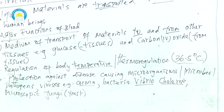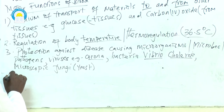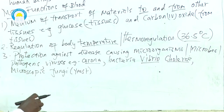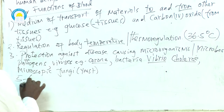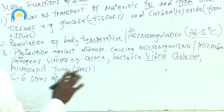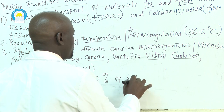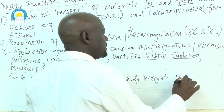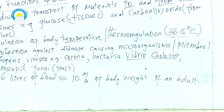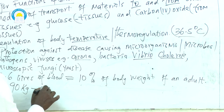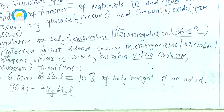How much blood is found in human beings? An average, medium-sized human being who is not overweight or obese has about five to six liters of blood. This is about 10% of the body weight of an adult. So if you are 90 kilograms, about nine kilograms will be the blood circulating in your circulatory system.